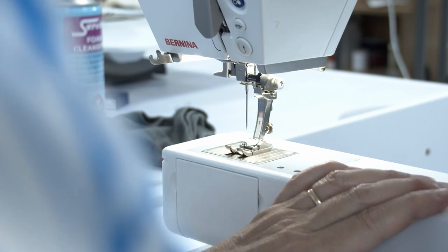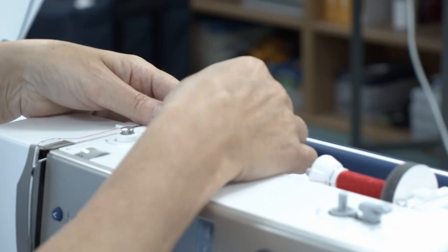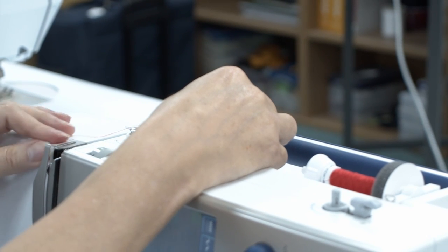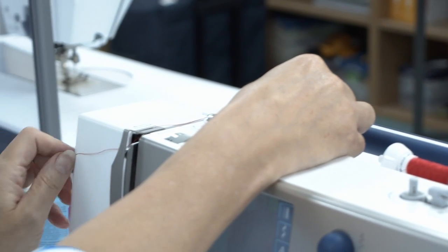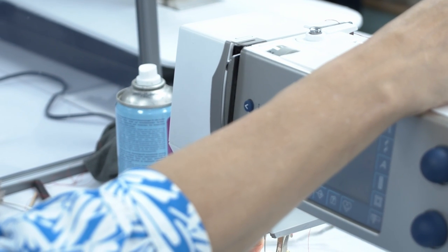Then I'm going to raise the feed dogs and hopefully thread the machine on top. I'm going to hold my thread here and follow the arrows on this machine, holding the thread here and checking that my needle is in the up position.